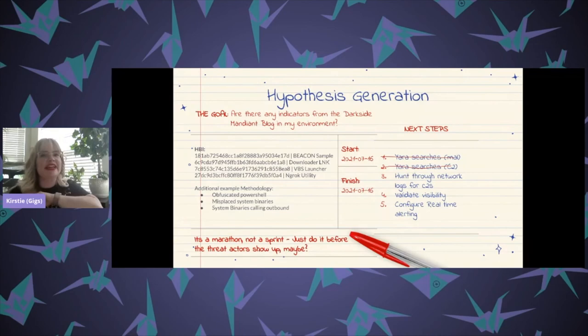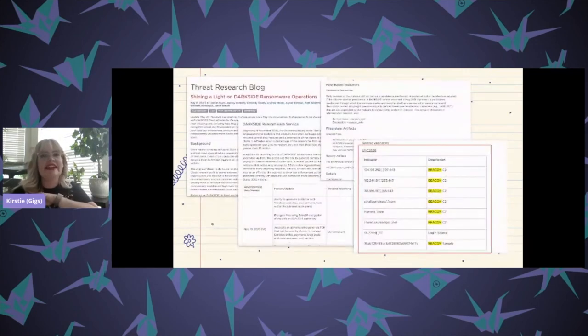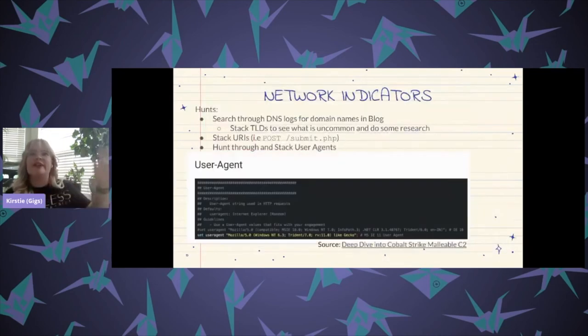So we can cruise right through here. Next we're talking about our network-based indicators here. We can look for network-based call-outs using our DNS logs. So making sure that you're logging DNS first is the first step. And then you can kind of go through and stack like custom URIs, right? You can see a bunch of different post requests and stack those and see what is kind of anomalies within your environment.